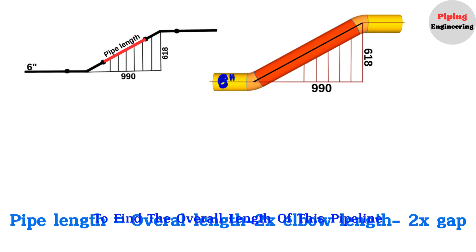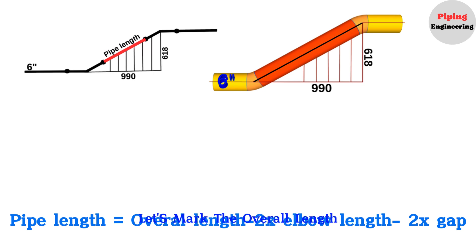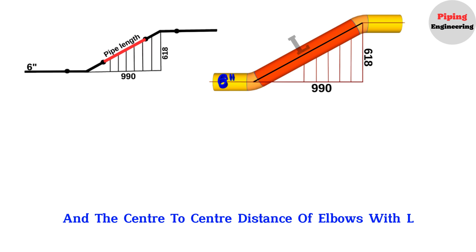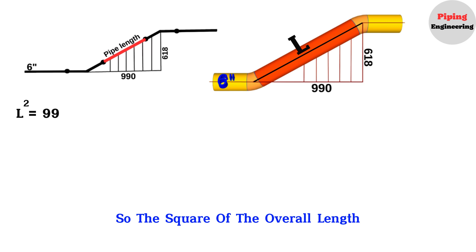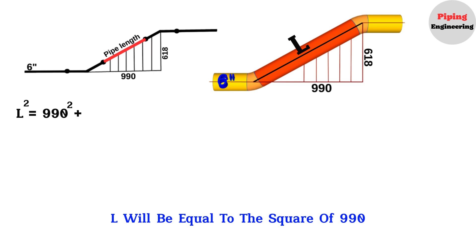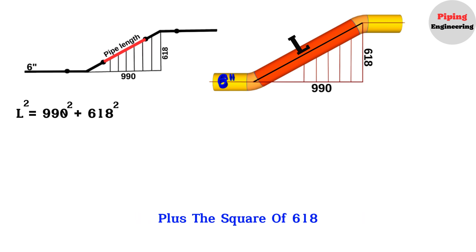To find the overall length of this pipeline, we will use the Pythagorean theorem. Let's mark the overall center-to-center distance of the elbows as L. So the square of the overall length L will be equal to the square of 990 plus the square of 618.